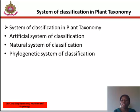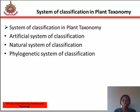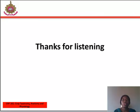Two: natural system of classification — in the natural system, individuals under one particular group are closely related to one another, and all the important characters are taken into consideration; plants are classified according to their related characters. Three: phylogenetic system of classification — this is a system based on the idea of organic evolution, attempting to find out the relationships between different groups, that is, to trace the phylogeny of the group. Thanks for listening; you can read more about this in the study material.